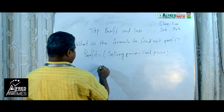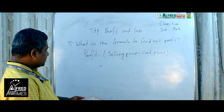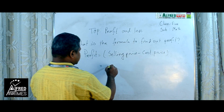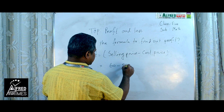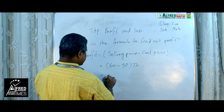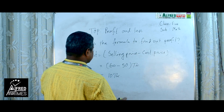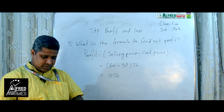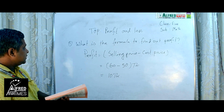For example, if the selling price is 60 Taka and the cost price is 50 Taka, so what is the Profit? 10 Taka. 10 Taka is the Profit. Okay, everybody write this down.